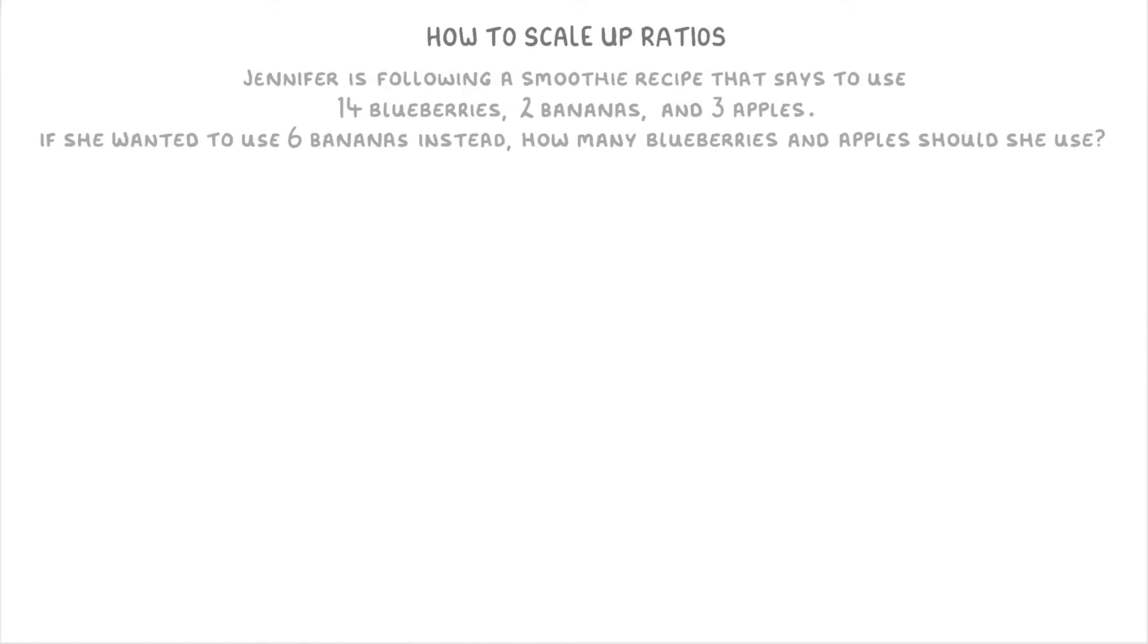So this one's a little bit different because we have 3 things rather than 2, but the technique that we use is almost exactly the same. So we start by writing out that we have blueberries, bananas, and apples, and then below each one we can put how many the recipe asks for, so 14 to 2 to 3, which is our ratio.